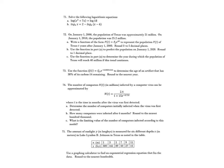Solve the following logarithmic equations. Since we have log of something equals log of something else, we can set the inside expressions equal to one another: x squared plus 7x equals 18. Subtract 18 to get x² + 7x - 18 = 0, then factor to get x equals negative 9 and x equals 2.